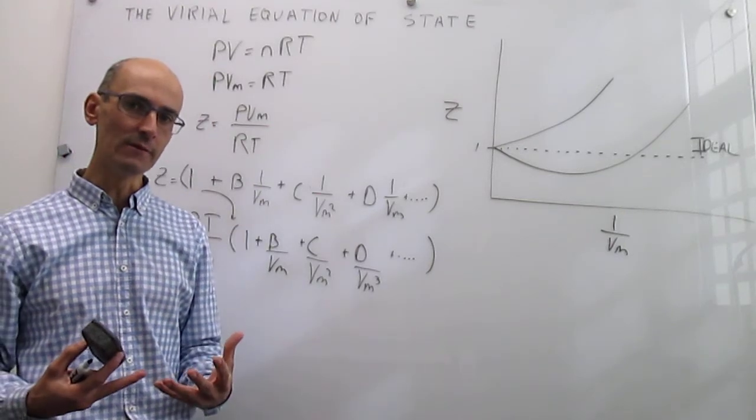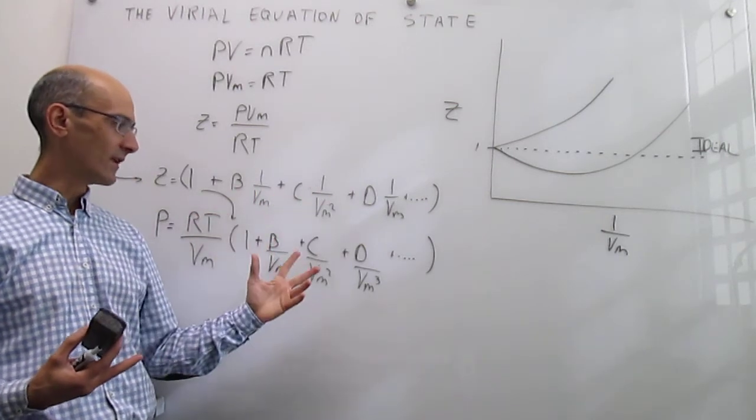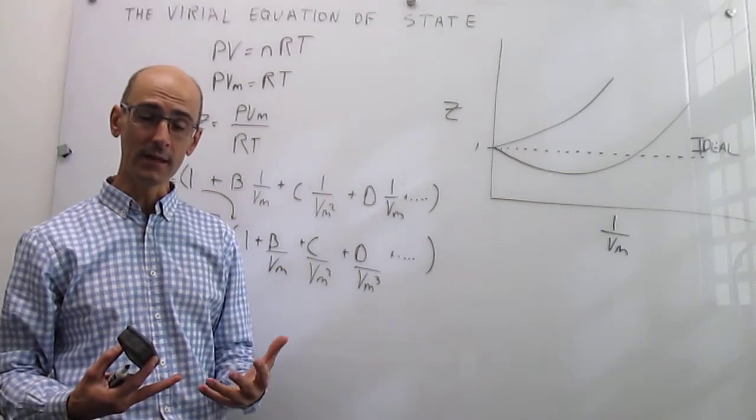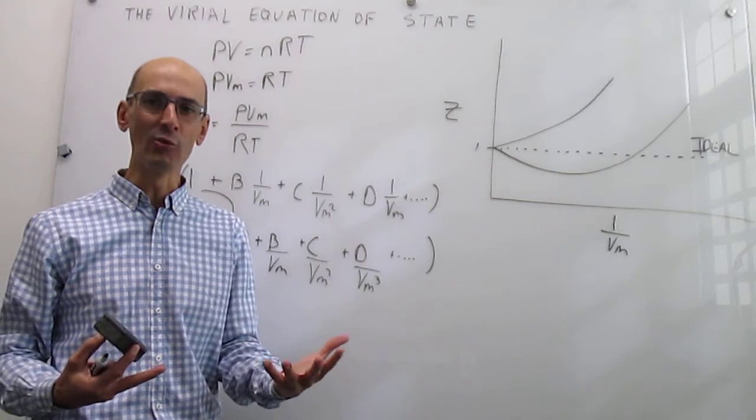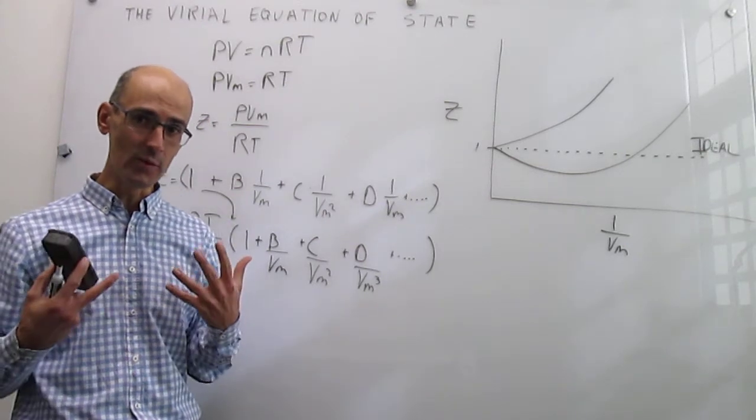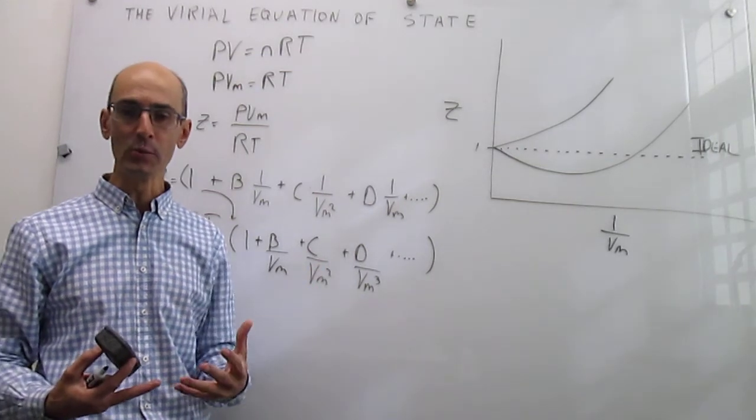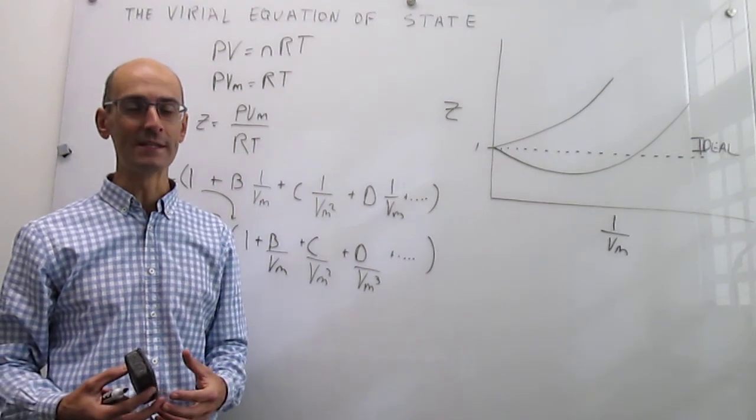So you can envision this virial equation of state as a brute force technique to capture reality. But the interesting aspect of all this is whether these constants that you get in the expansion mean something, and if they mean something, can that let us understand a little bit better what's going on inside that gas? So that meaning of those constants and the relationship to a concept that is called the Boyle temperature is going to be something that we will see in the next video.